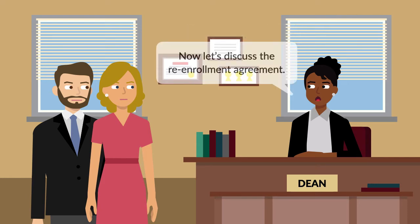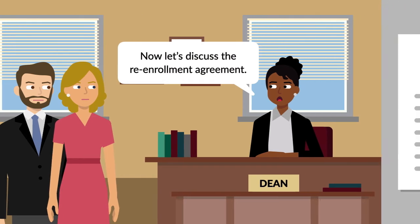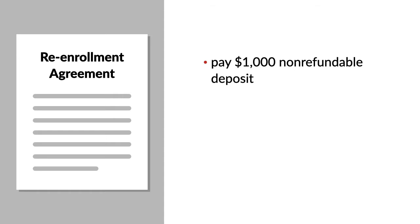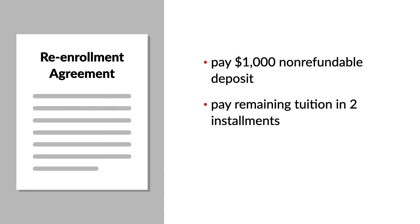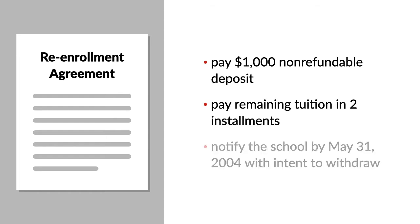Additionally, the Patches entered into a re-enrollment agreement with the school. Under the agreement, the Patches were required to pay the school a $1,000 non-refundable deposit and the remaining tuition balance of $13,490 in installments. Further, the agreement required the Patches to notify the school in writing by May 31, 2004, if they intended to withdraw their daughter from the school.